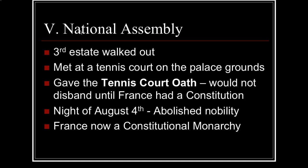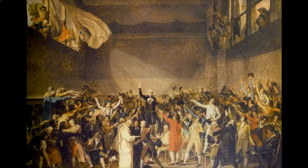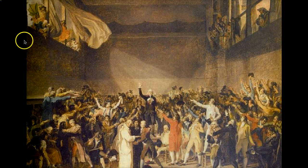Just to bring us back and remind us of where we came from: we finished talking about the three estates in France and the financial crisis. We have the meeting of the Estates General and the establishment of the Tennis Court Oath, which is going to get rid of the rights of the nobility and establish France as a constitutional monarchy. You can see the revolutionaries in this artist's rendering, even hanging from the windows. Some members of the first and second estate join, but it's primarily composed of members of the third estate.